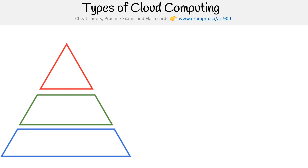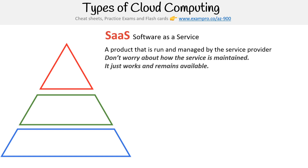Hey, this is Andrew Brown from Exam Pro. We are looking at the different types of cloud computing. We have this nice pyramid on the left-hand side to help us understand how each type builds off the other. Starting at the top of our pyramid, we have Software as a Service, also known as SaaS.